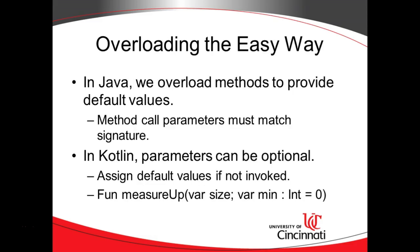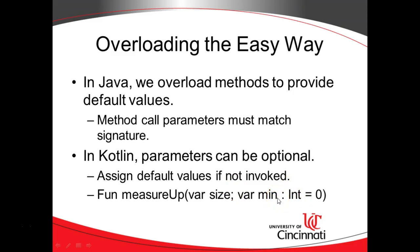Overloading the easy way — we touched on this earlier. I have a function called measureUp with var size and var min colon int equals zero. That means I can pass either one parameter or two. If I pass one, it's assigned to size and min gets the default zero. If I pass two, one goes to size and the other to min. In Java we'd tend to overload because the number of arguments must match, but in Kotlin we can have default values assigned to parameters — if nothing's passed in, just fall back to the default — saving us from making a lot of extra overloaded methods.